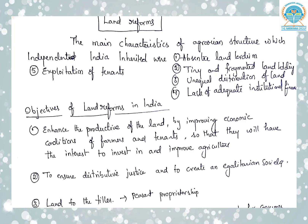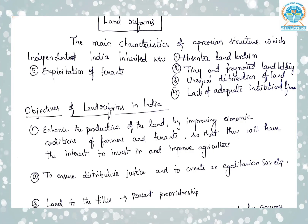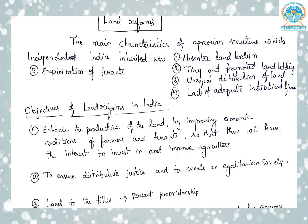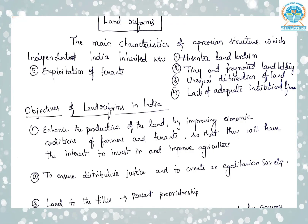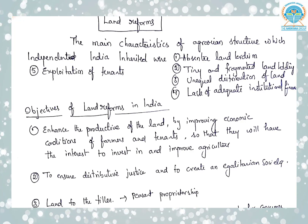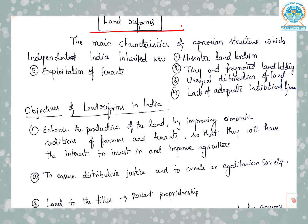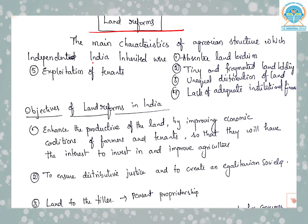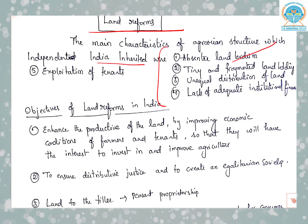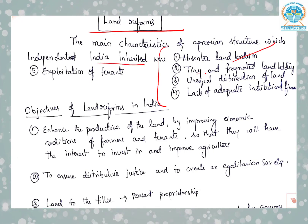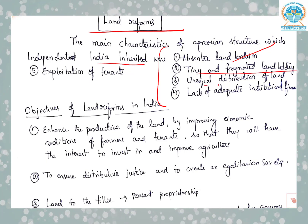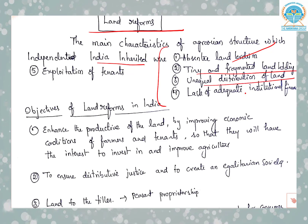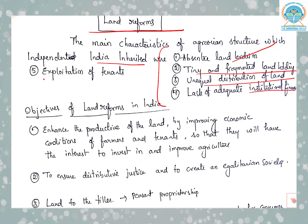Land reforms therefore became one of the vital aspects of the agricultural development policy, especially after the concept of the first five year plan came to stay. The main characteristics of agrarian structure which independent India inherited were: absentee landlordism, tiny and fragmented landholding, unequal distribution of land, lack of adequate institutional finance, and exploitation of tenants.